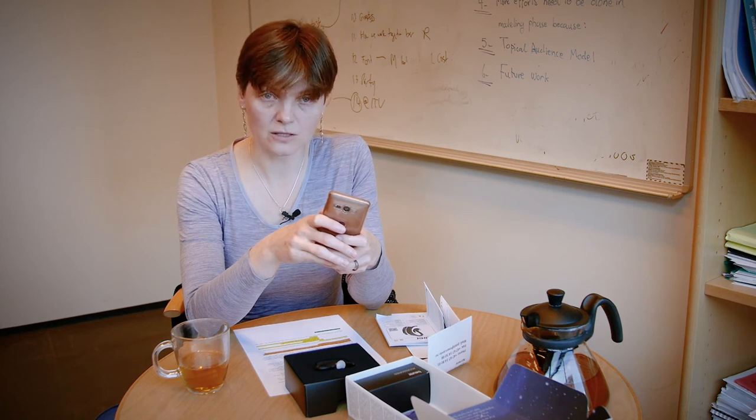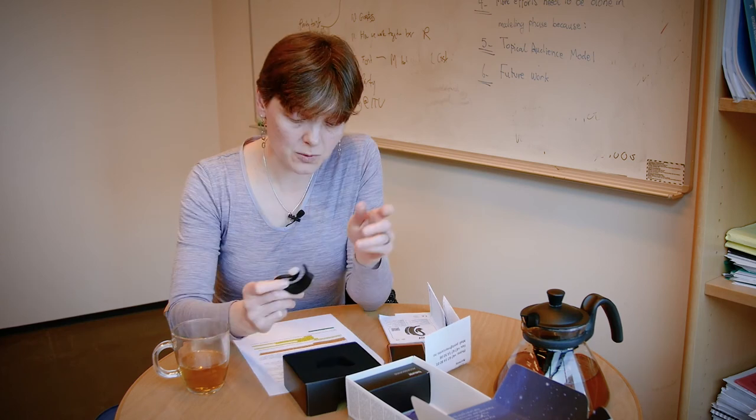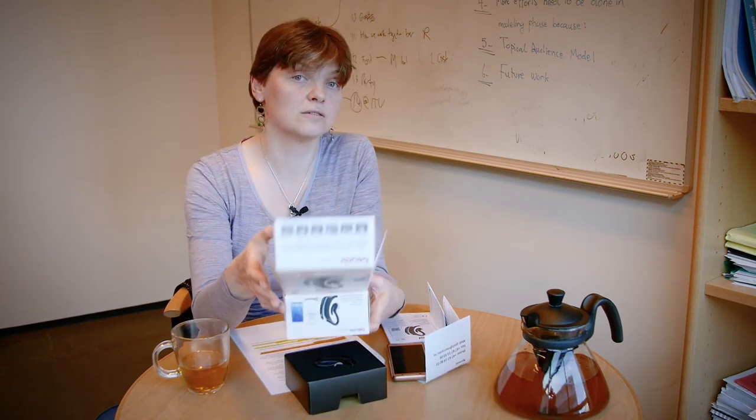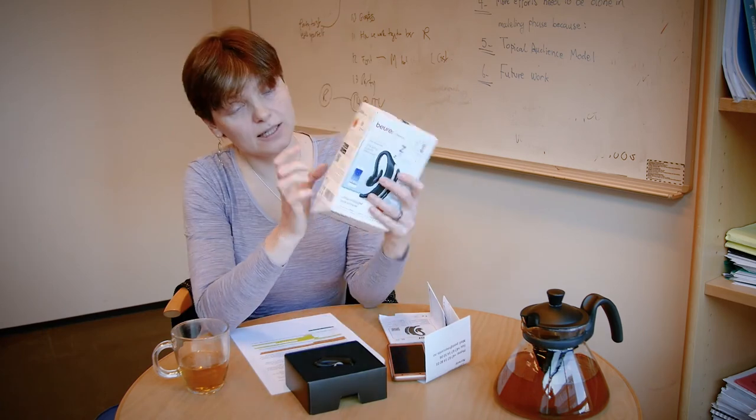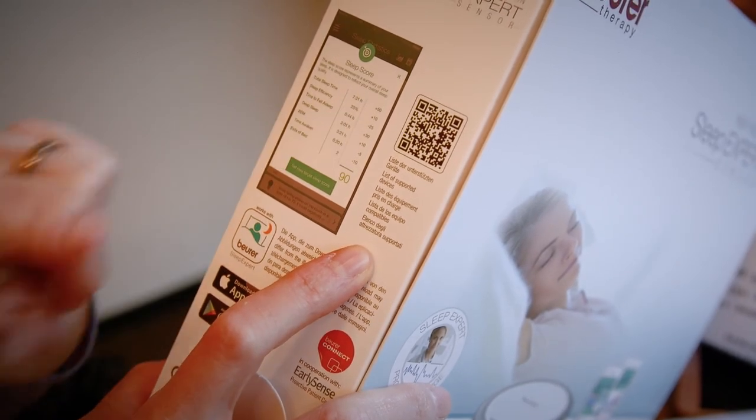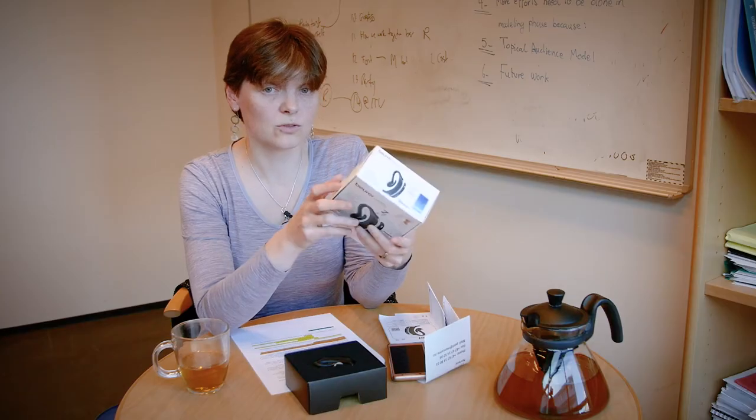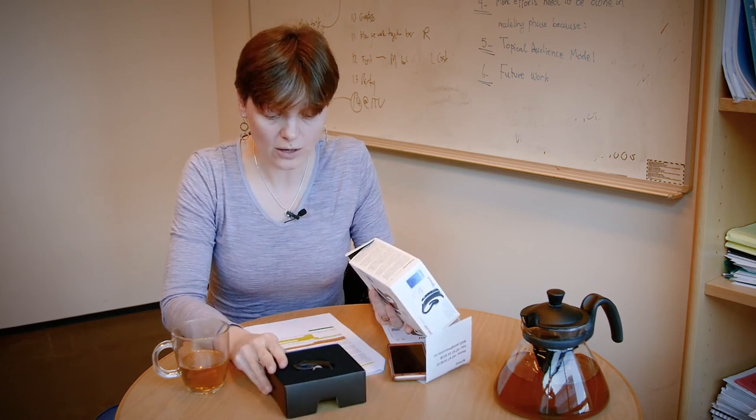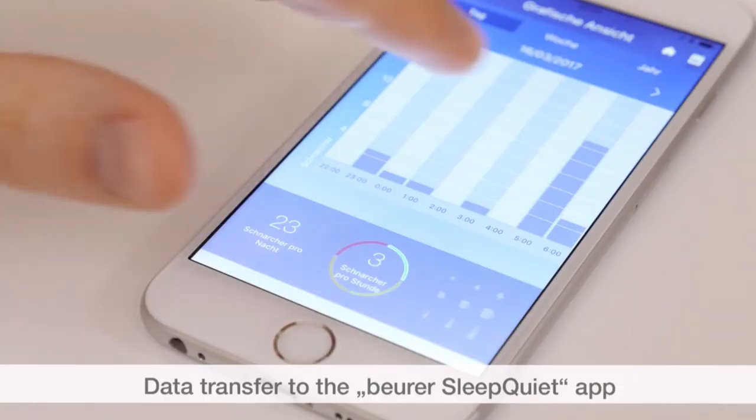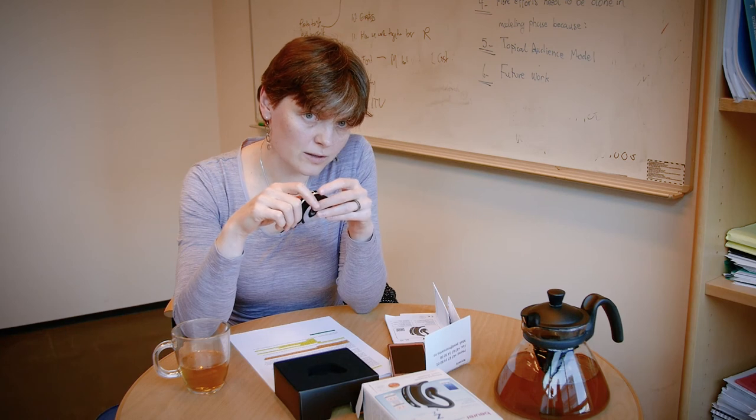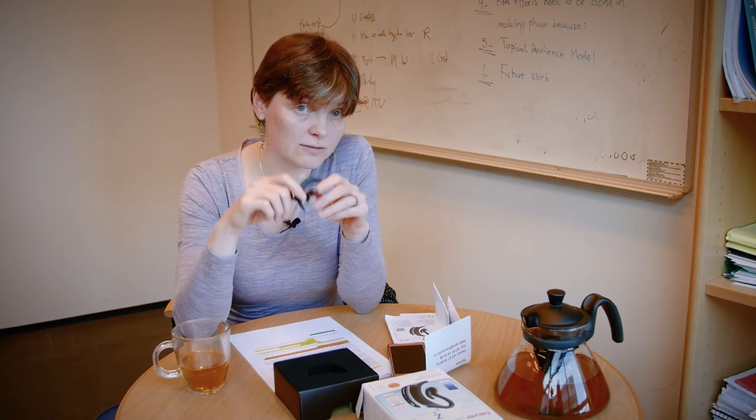When you buy it, nothing on the box tells you that not all devices are compatible, except there's a tiny QR code that says, list of supported devices. Turns out that the app and the device work with some smartphones and not others. It wasn't anything that the shop proprietors told us about. Where is measured data saved? The answer is that the data is saved on the snore stopper itself, and on the smartphone once it's transferred. This doesn't actually tell us whether the company also saves the data.